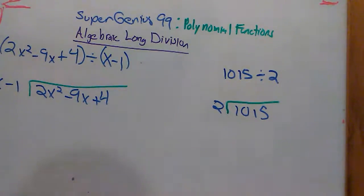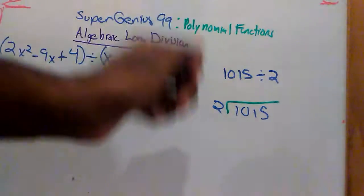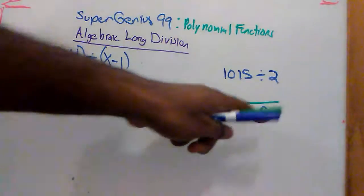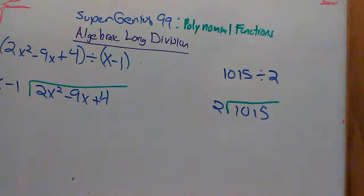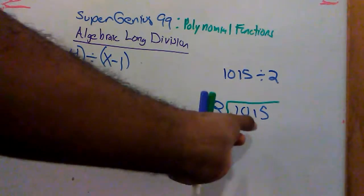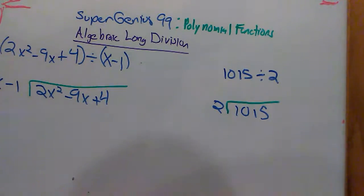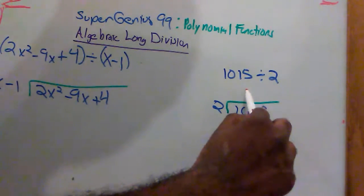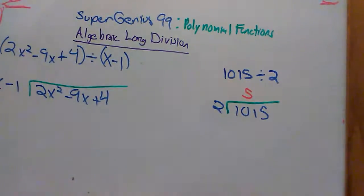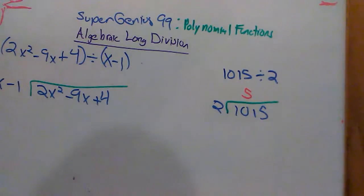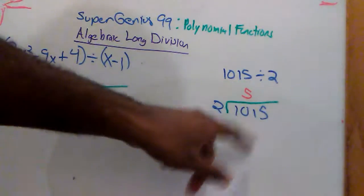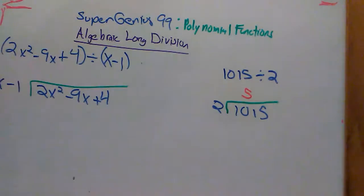And when you have the five, because two goes into ten five times, where does the five go? It goes over the last digit of the chunk that you took. Since the chunk was ten, the last number of the ten is a zero, so you put the five over the zero. Remember that. I took a chunk, I divided it, and I put the result of that division problem over the last digit in the chunk.